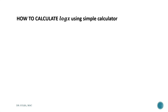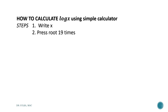How to calculate log x using a simple calculator: Step 1 — write x in your calculator. Then press root 19 times and subtract 1 from the result. Multiply the previous result by 227698 and you will get the value of log x.